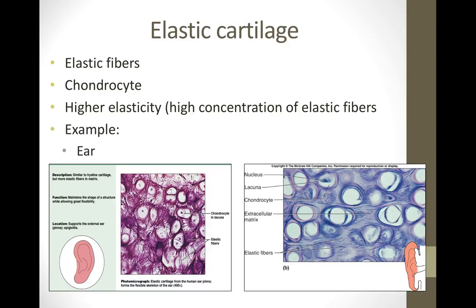The second type of cartilage is elastic cartilage, which has a significant amount of elastic fibers. You can see those elastic fibers stained in the background — they look a bit like the bark of a tree. The cell type is still chondrocytes, housed within cavities called lacunae. A great example of elastic cartilage is your ear.